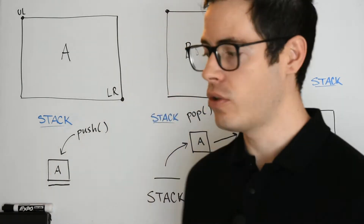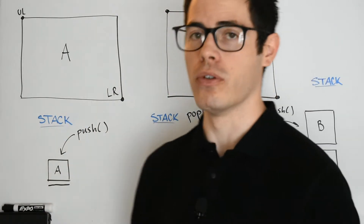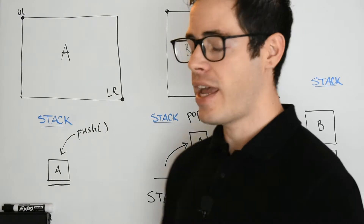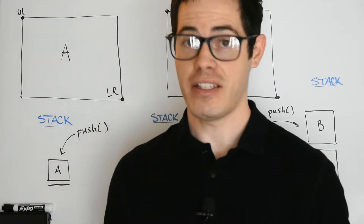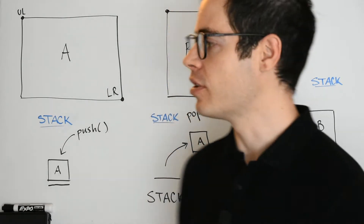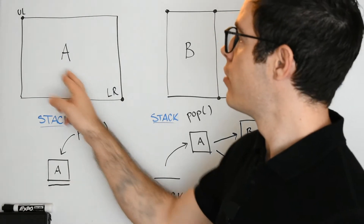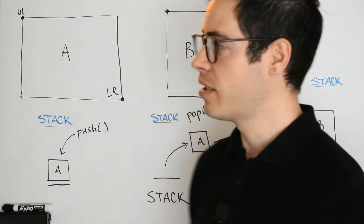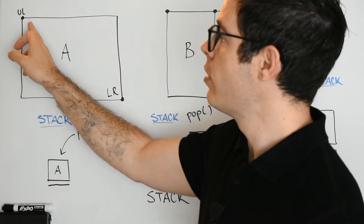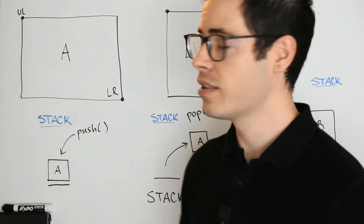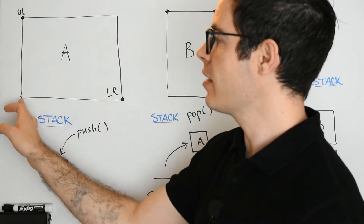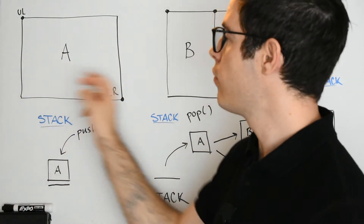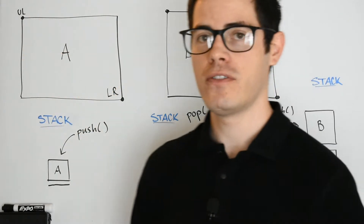The idea is pretty simple at its core. We're going to start off with a big room or a floor — we can call it either one. We have a big floor and we're going to call this floor A. We'll have some sort of class or data structure that holds the information for a particular floor, and the floor will have its own upper left and lower right locations. The reason I only store upper left and lower right is because if you know the upper left X and Y, you know all four corners.